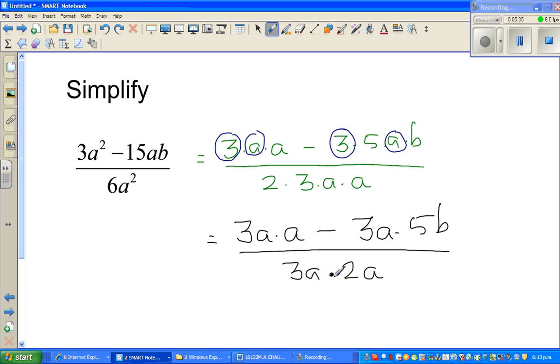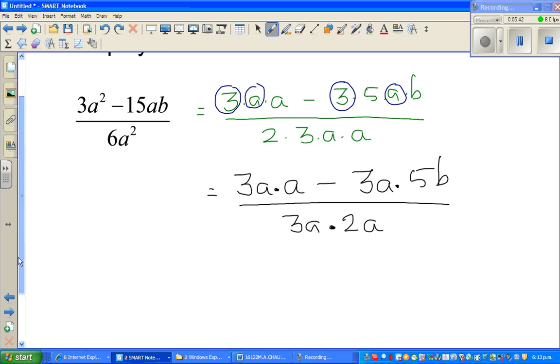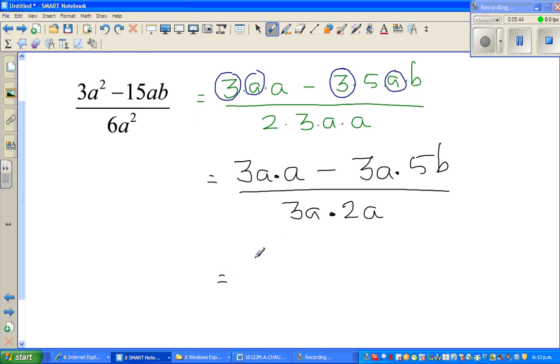You can see what I'm doing, where I'm leading you. I've factored out, I've written everything in terms of 3a, which is a common factor. So if you factor out a 3a in the numerator, you have a from here minus 5b from here, over 3a times 2a. And now you can cancel the 3a.